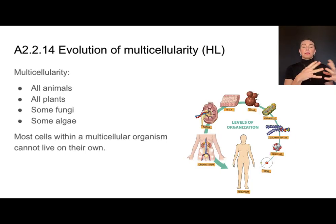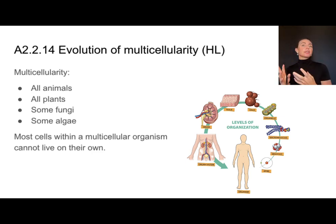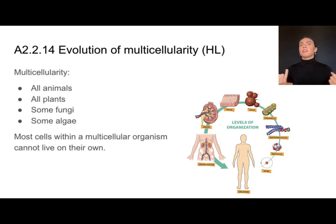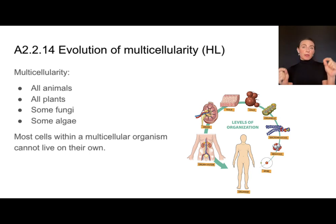When thinking about the pathway of how living things evolved, we started with prokaryotes, then we got eukaryotes — all of those were unicellular — and eventually multicellularity evolved. We now see multicellularity in all animals, which is part of the definition of an animal. All plants are multicellular, and then some fungi and some algae are multicellular, though not all of them.